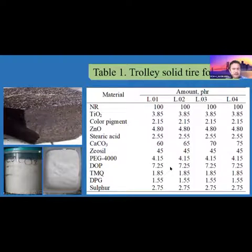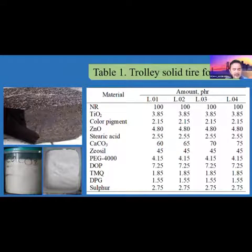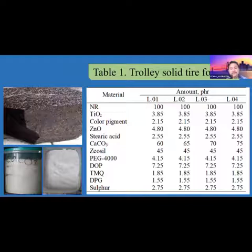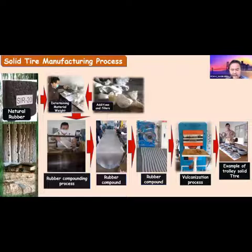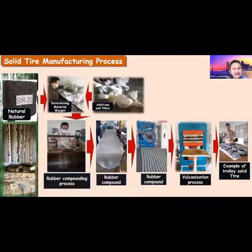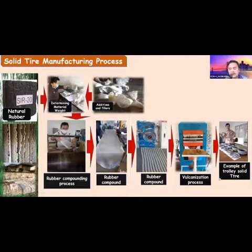Table 1 shows the solid tire formulas for airport trolleys. The ratio of calcium carbonate to other materials is conditioned across formulas L01, L02, L03, and L04. This picture shows the flow chart of the solid tire manufacturing process, from material preparation and compounding process through vulcanization to produce the solid tire, along with examples of the finished solid tire.